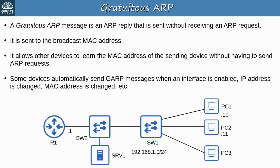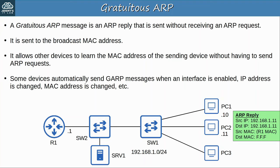Gratuitous ARP allows other devices on the local network to learn the MAC address of the device that sent the gratuitous ARP without having to send ARP requests. Some devices automatically send gratuitous ARP messages when an interface is enabled, an IP address is changed, a MAC address is changed, etc. For example, if PC2's network interface is enabled it might send this gratuitous ARP reply, which is flooded in the local network. The other devices will add an ARP entry for PC2 in their ARP tables, and the switches also add entries for PC2 in their MAC address tables.